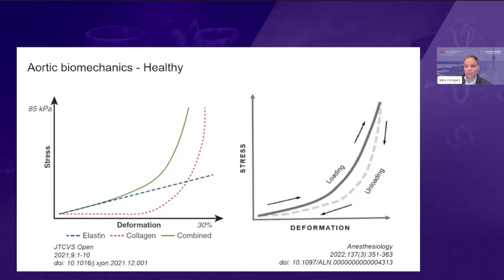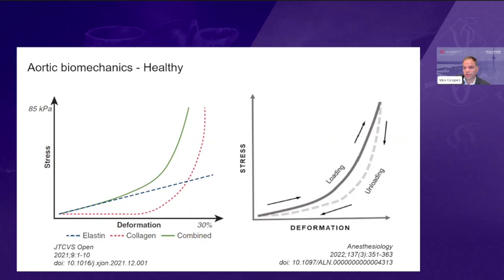When you biaxially test a piece of aortic tissue from a normal healthy individual, what you see is the combination of effects from elastin and collagen on the shape of the curve — a nonlinear elastic response. Early in the deformation, you have an elastin-dominated part of the curve, and as you get towards higher deformation, the collagen — shown as the red dashed line — becomes engaged, and the curve shape progressively reflects less elastin and more collagen function.